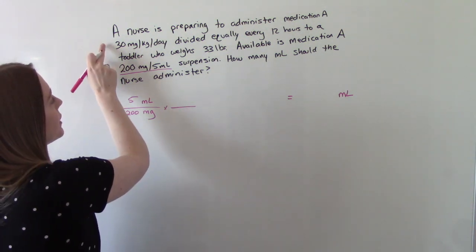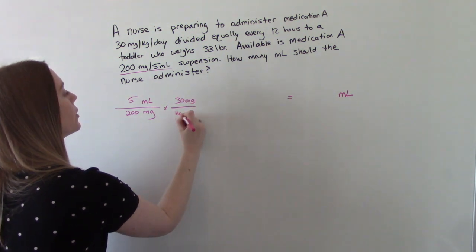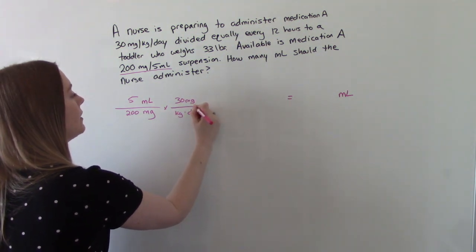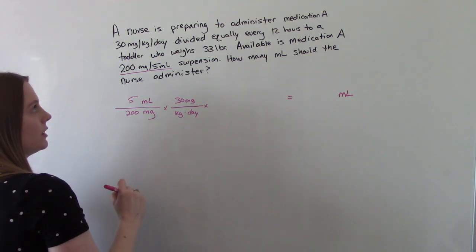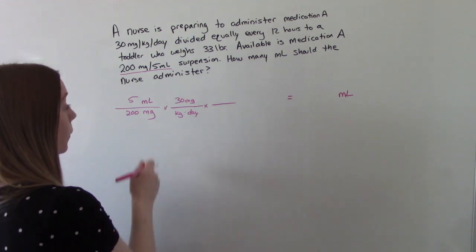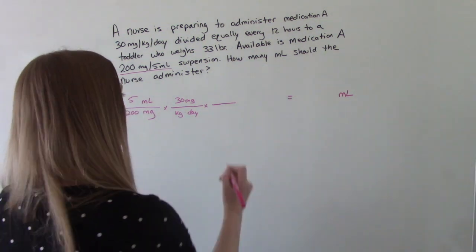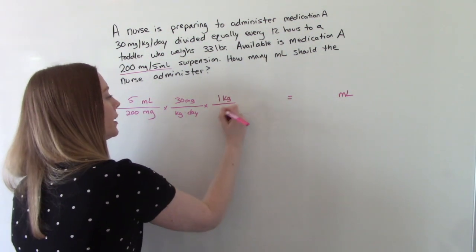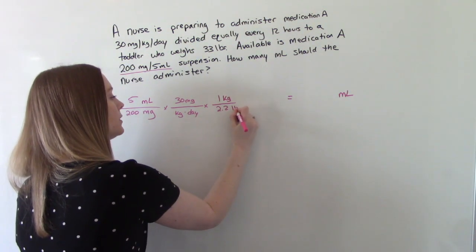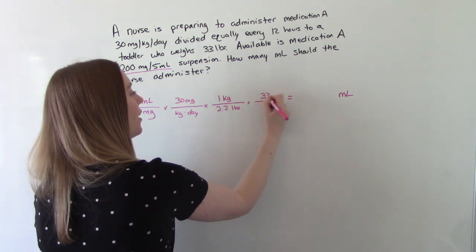What else do we know? We know we need to administer 30 milligrams per kilogram per day. And then we also know that we have a child that weighs 33 pounds. So we don't have pounds on here anywhere, so we need to do a conversion. So 1 kilogram is 2.2 pounds. And now we can add our 33 pounds.